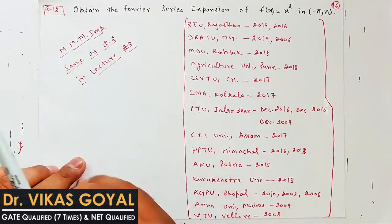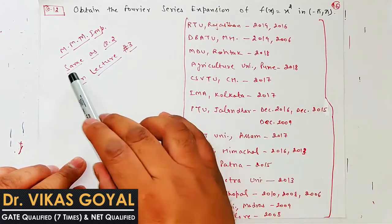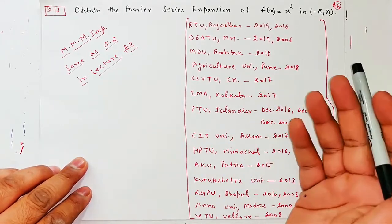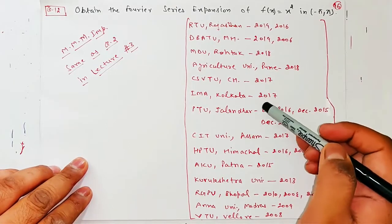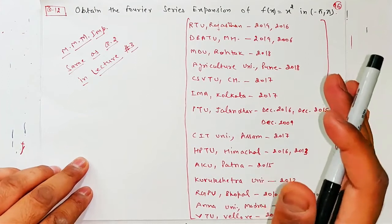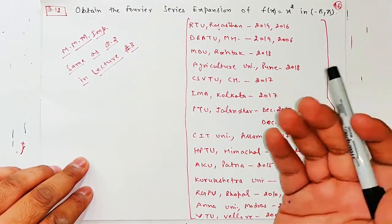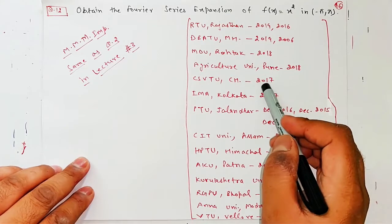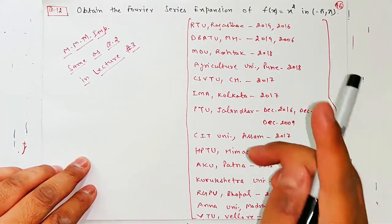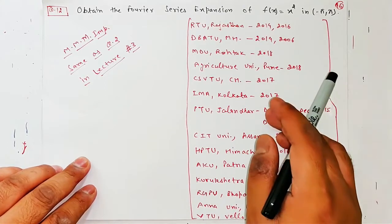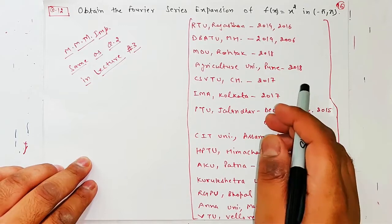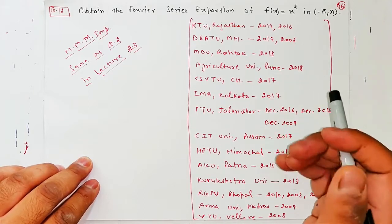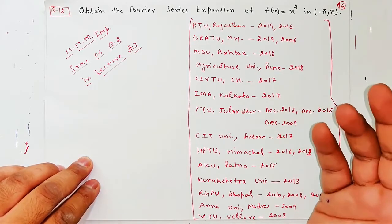Yeh most important question hai — aap dekh sakte hain kitni baar university exams mein aa chuka hai. Yeh same as question number 2 hai jo humne lecture third mein kiya tha, toh main question number 2 ko hi repeat kar raha hoon. Please like the video, subscribe the channel, aur doston ke saath zaroor share kijiye. Agar aap chahte hain ki video lectures isi tarah upload hote rahein future mein, toh please watch the videos online only on YouTube so that it will support me and I will continue to make such lectures in future as well. Start karte hain question number 12.